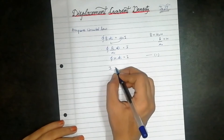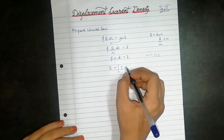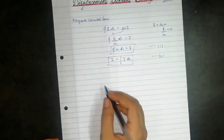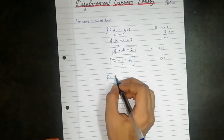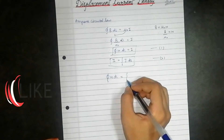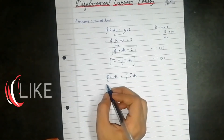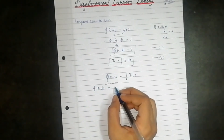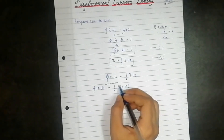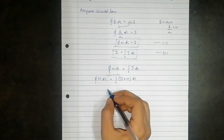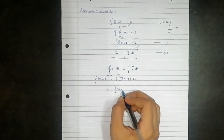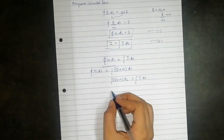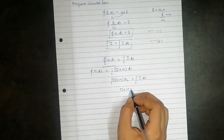We also know that I is given as the surface integral of J·dS, where J is the current density. Equating these two equations we have the line integral of H·dl equal to the surface integral of J·dS. Applying Stokes' theorem, H·dl equals the surface integral of (∇ × H)·dS. Therefore ∇ × H = J.